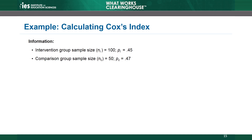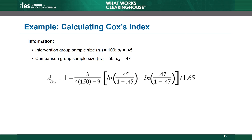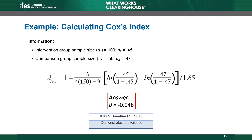This example walks through how to calculate Cox's index manually. In the example, 100 youth are in the intervention group and 50 youth are in the comparison group. The intervention group is 45% white, while the comparison group is 47% white. On this measure, the groups are equivalent at baseline, as the effect size is negative 0.048 standard deviations. Baseline differences fall within the acceptable range according to the equivalence standard, and the WWC would not require a statistical adjustment for the baseline difference.